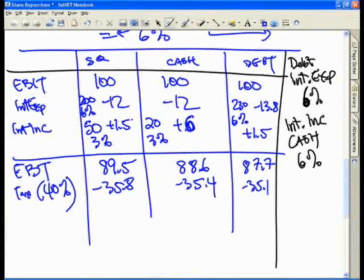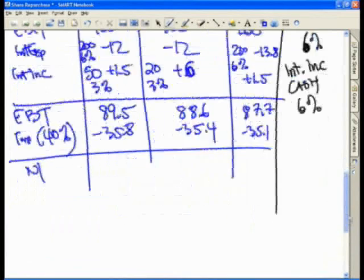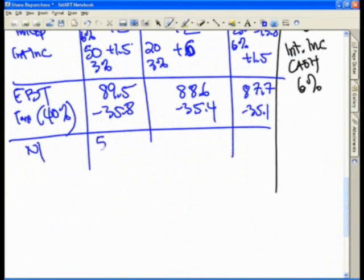And you look at net income, net income now when you do the math gets you $53.7, $53.2. We have a slight decrease in net income, as well as $52.6, an even smaller net income amount.